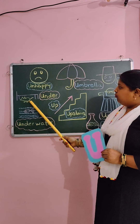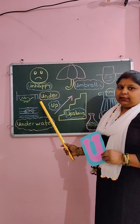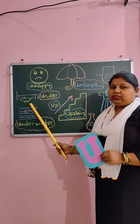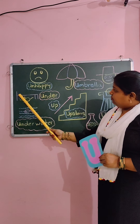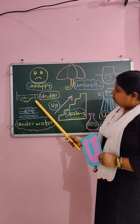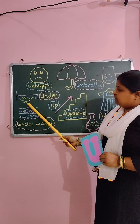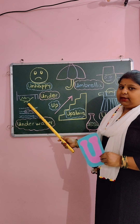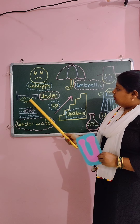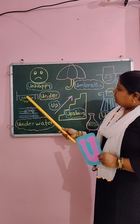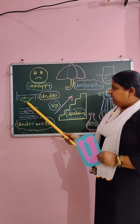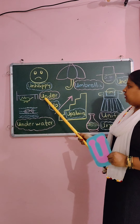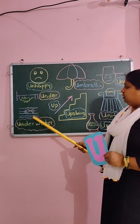U for under. Under means kisi chiz ke neche. See, one bed is there. Aur bed ke neche kya hai? Ek rat hai. So the rat is under the bed. Bed ke neche. Under means neche.